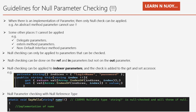Null checking can also be applied to indexer parameters, and the check is added to both the get and set accessors. For example, there is a string array called indices with two values — login name and password — and there is an indexer: public string this[string index!!]. With null parameter checking applied, get and set execute only if index is not null. Regarding null reference types in conjunction with null parameter checking: in a nullable type, a string is null-checked and will throw if null. In the example method SayHello, with a nullable string name!!, supplying a null value will throw the error.